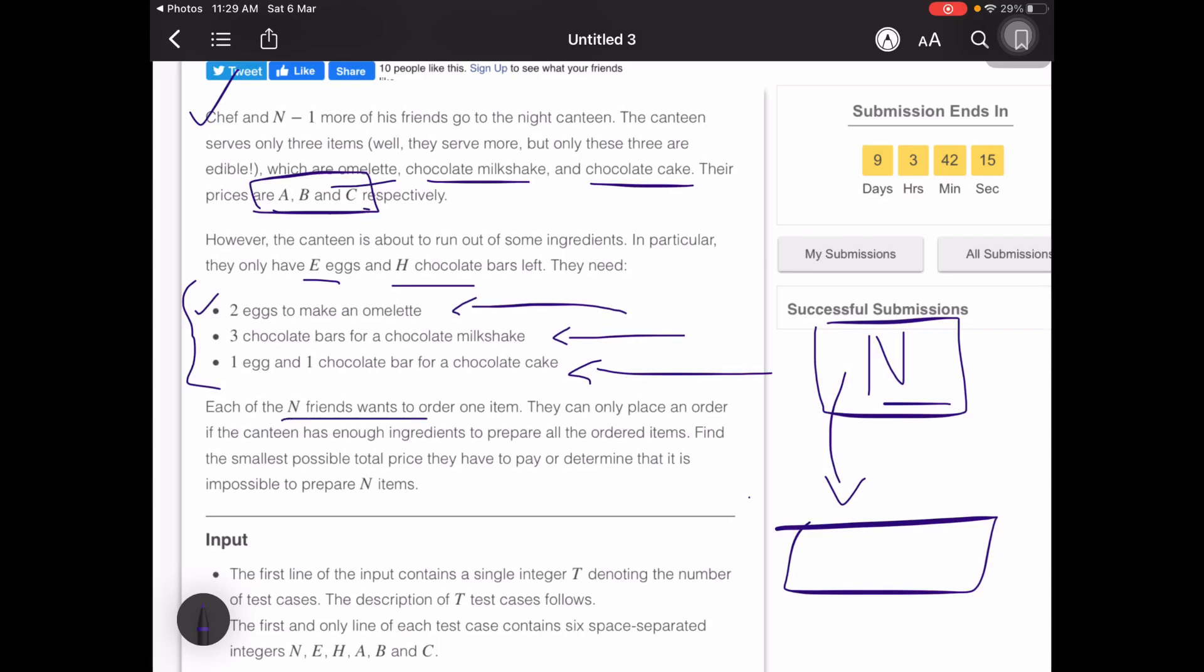Each of the n friends wants to order one item, so there are probably n items that they are going to order. They can only place an order if the canteen has enough ingredients to prepare all the ordered items.